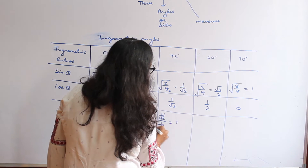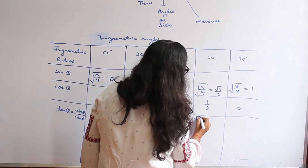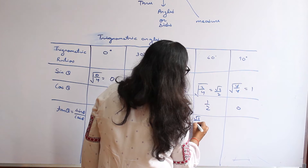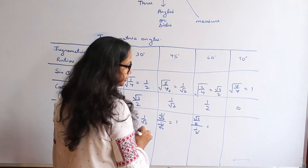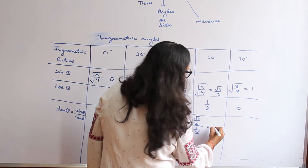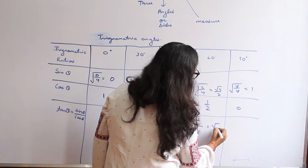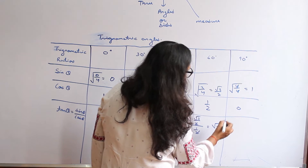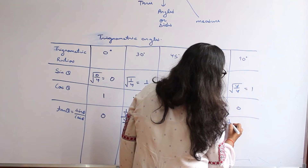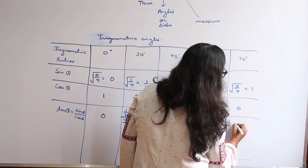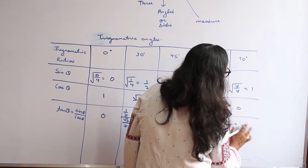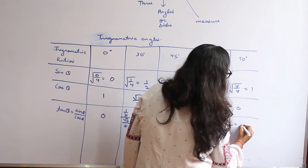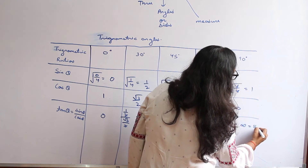At 60°, tan theta is (root 3/2) over (1/2); the 2s cancel and the result is root 3. At 90°, we get 1 over 0, which is infinity — and infinity is not defined.